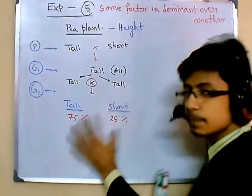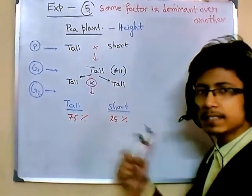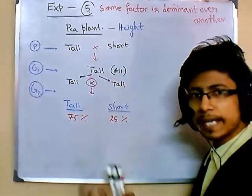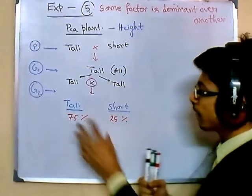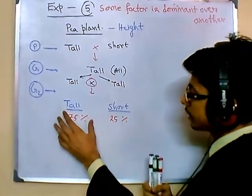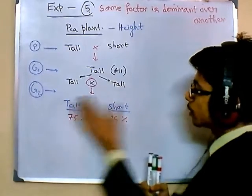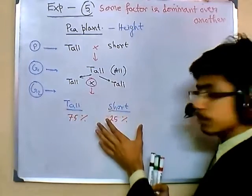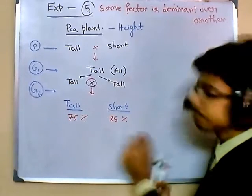He did this experiment over and over again, and all the time he found a 3-to-1 ratio between the tall and short plants — 75 percent tall, 25 percent short.